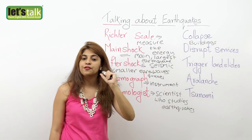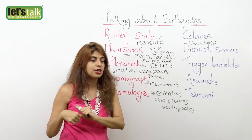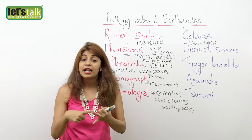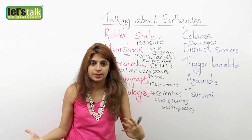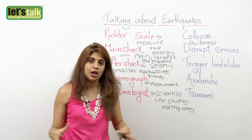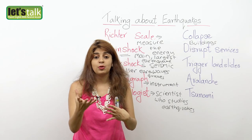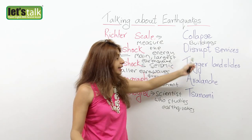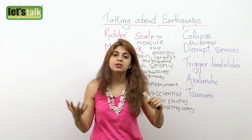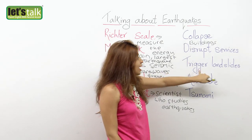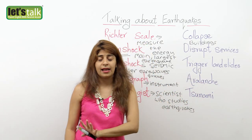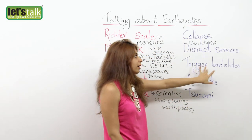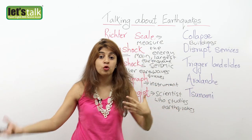Another effect is disrupted services. When an earthquake occurs, all services are disrupted — phone services, electric services, even gas services. That's exactly what happened in Nepal; people were trying to connect with others there but were unable to, because all the phone services were disrupted. The next effect is triggered landslides — because of an earthquake, there's a strong possibility it would trigger landslides, meaning falling rocks.